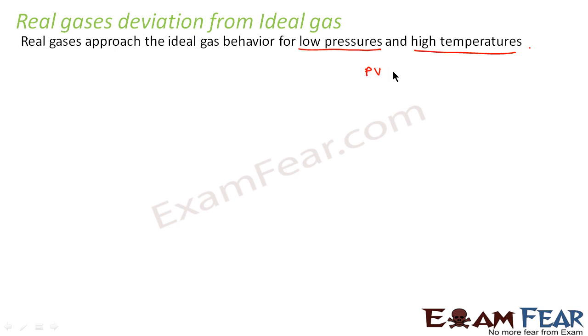As we already know that an ideal gas follows the ideal gas equation at all temperatures and all pressure. Let us suppose for low pressure. That is PV is equal to μRT. Let us suppose for one mole. Let us consider this equation for one mole.